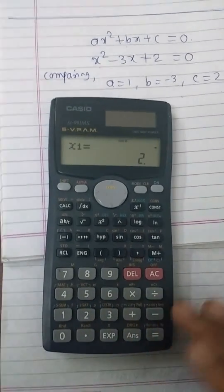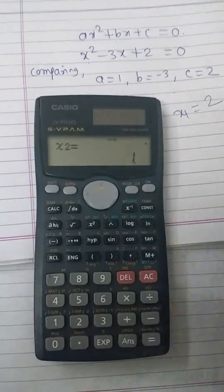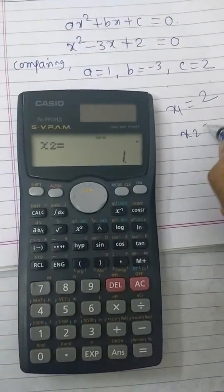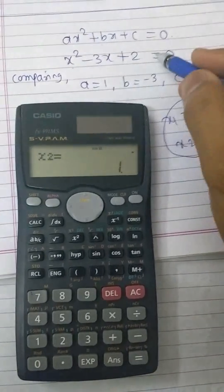Press equal button, then we will get a solution: x1 = 2 and x2 = 1. These are the solutions of this quadratic equation.